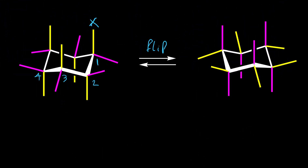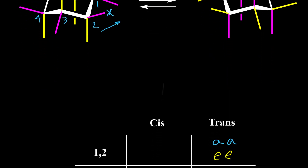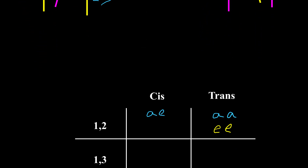Now let's look at positions one and two when we have one axial and one equatorial. X here is pointing up and here is pointing up, so it is cis when we have one axial and one equatorial on carbons one and two. With ring flip, axials become equatorial and equatorial becomes axial. These two conformers may be the same or different depending on whether we have the same or different groups on the cyclohexane ring.